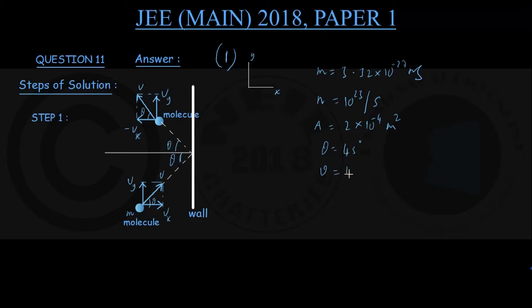Angle theta is given to be 45 degrees, and also the speed of the molecule before and after the collision remains unchanged at 10³ m/s. This is step number 1: drawing a figure and taking down the data given in the question.